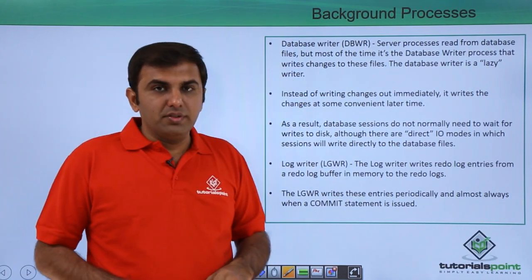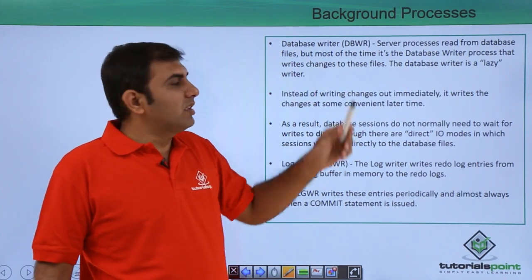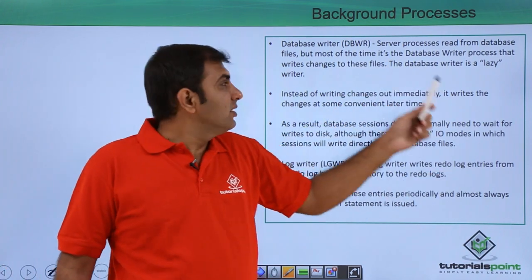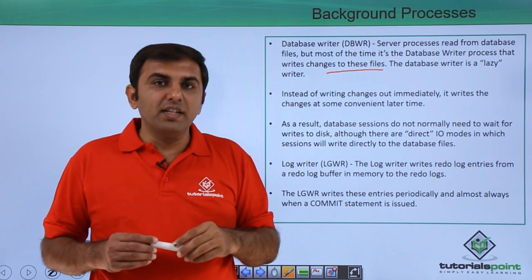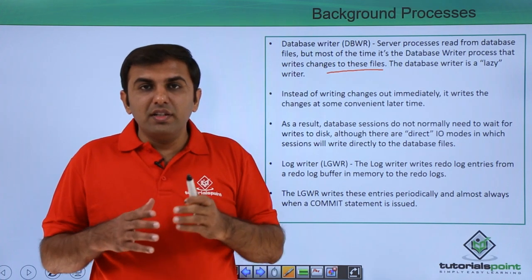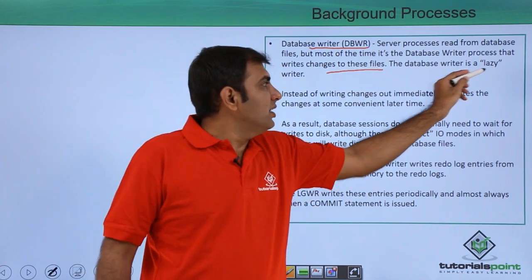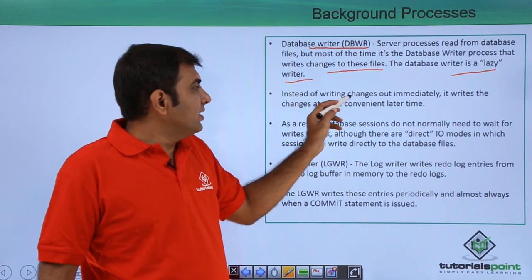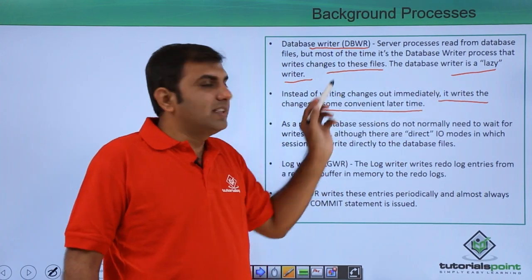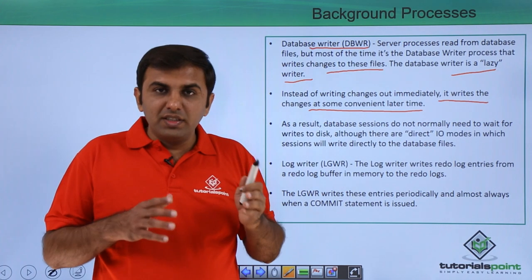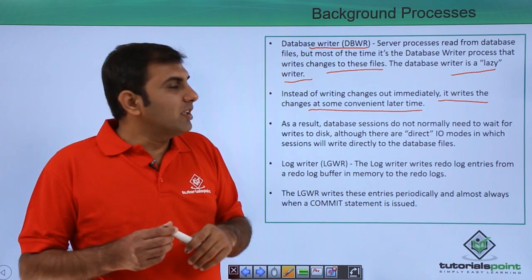Next, the database writer process (DBWr). The server process reads from the database files, but most of the time it is the database writer process that writes changes to those files — when you are inserting, updating, or deleting data. This writer is a lazy writer: instead of writing changes out immediately, it writes the changes at some convenient later time — like 5, 10, or 15 seconds later, depending on the transaction.